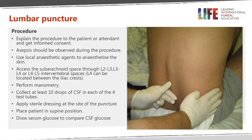I'm going to explain how we perform the procedure itself. First of all, as with any procedure, we should explain what we're going to do to the patient and get their consent — verbal consent is adequate. Asepsis is absolutely critical, as we don't want to introduce any infection. Local anaesthetic should always be used where available to reduce pain. Then it's important to find our landmarks: palpate the iliac crests and draw an imaginary line between the two, which is the level of the L4-L5 intervertebral space — a very safe place to perform the lumbar puncture as it's below the level of the spinal cord.